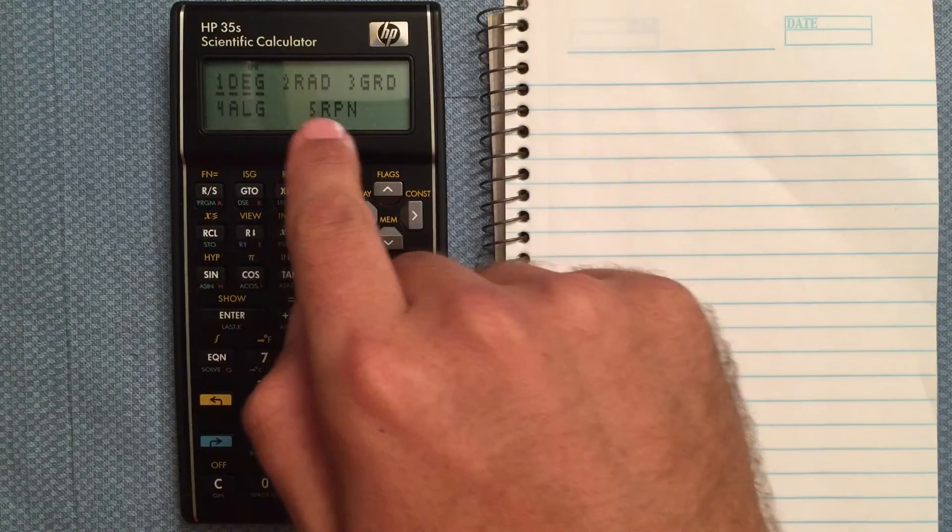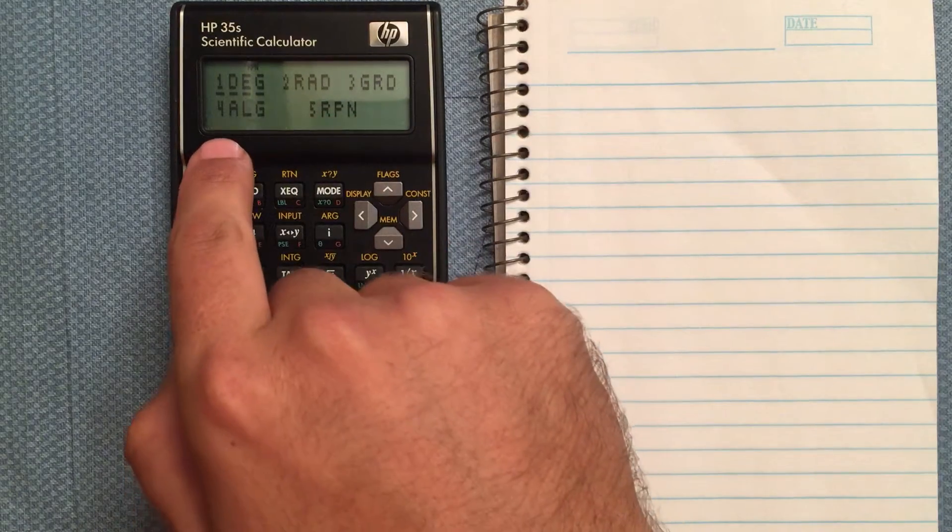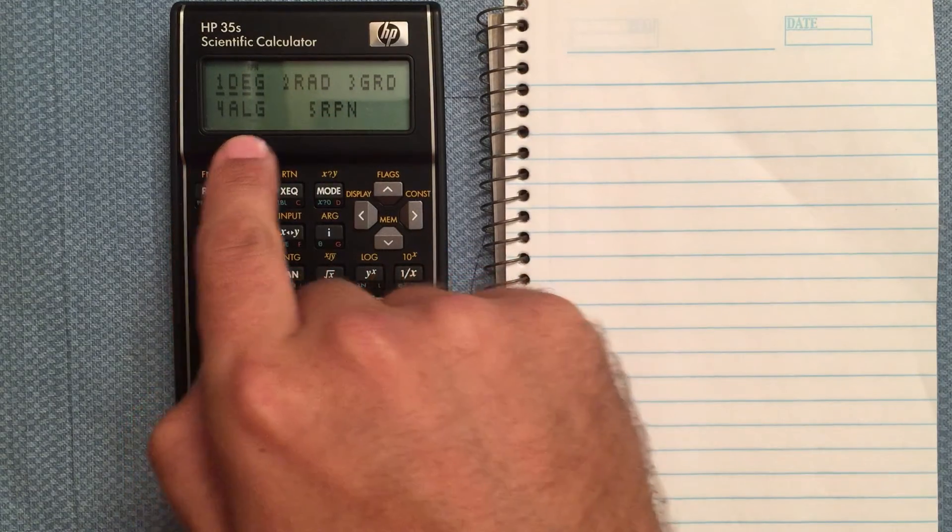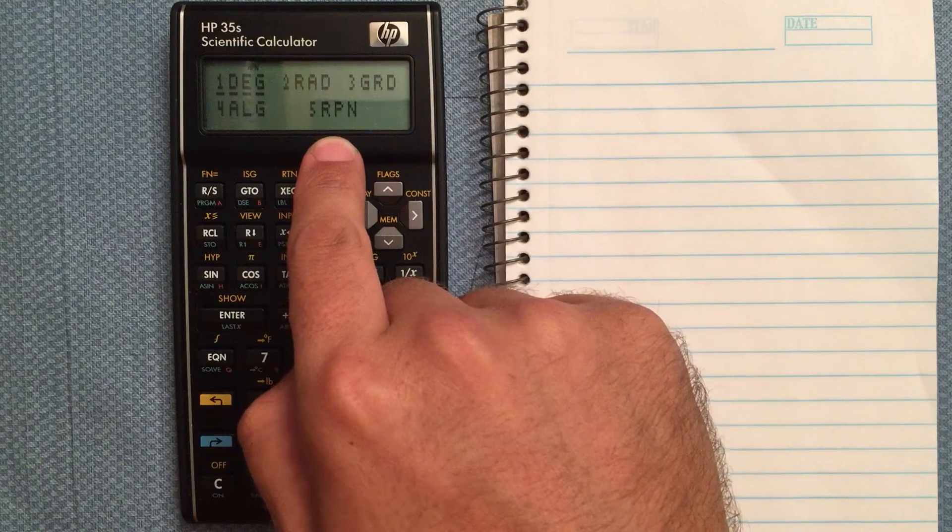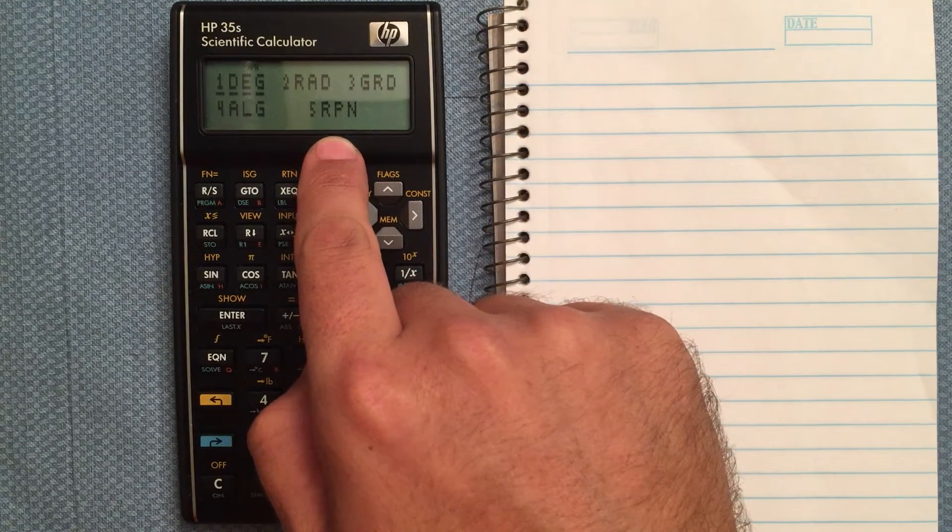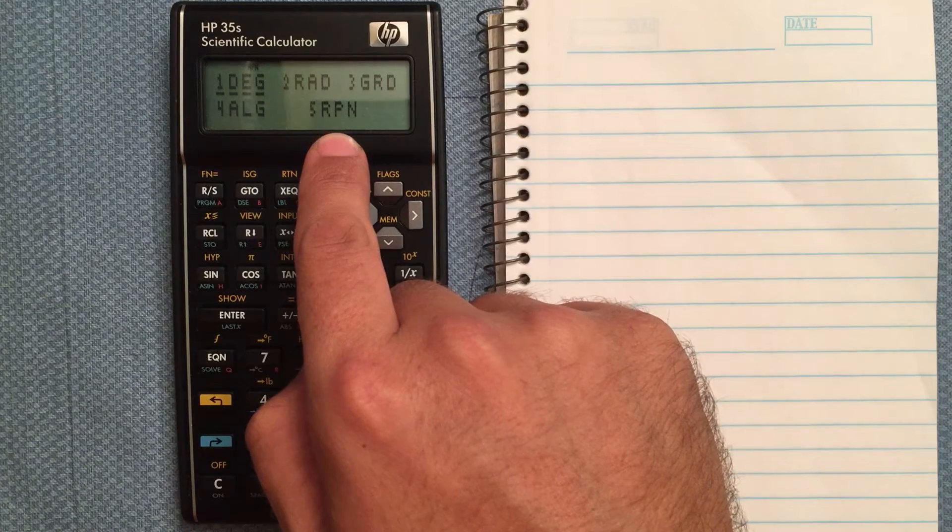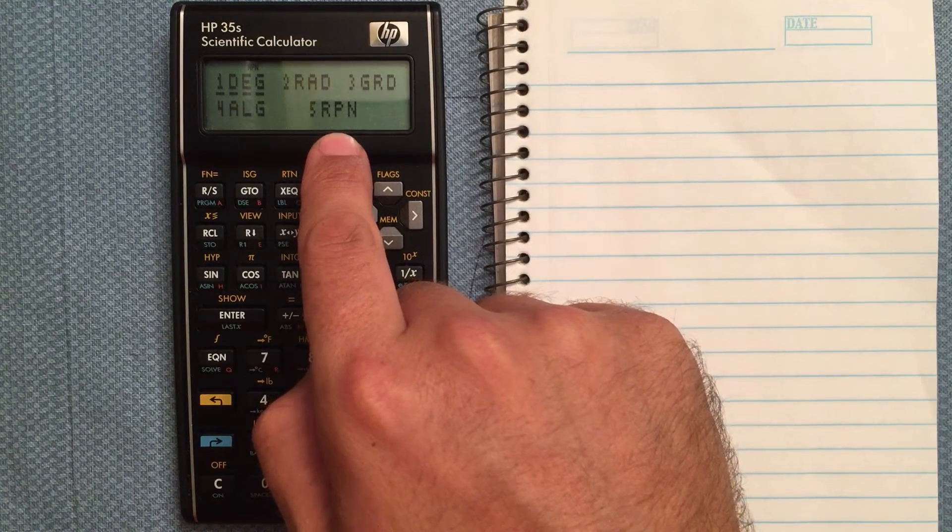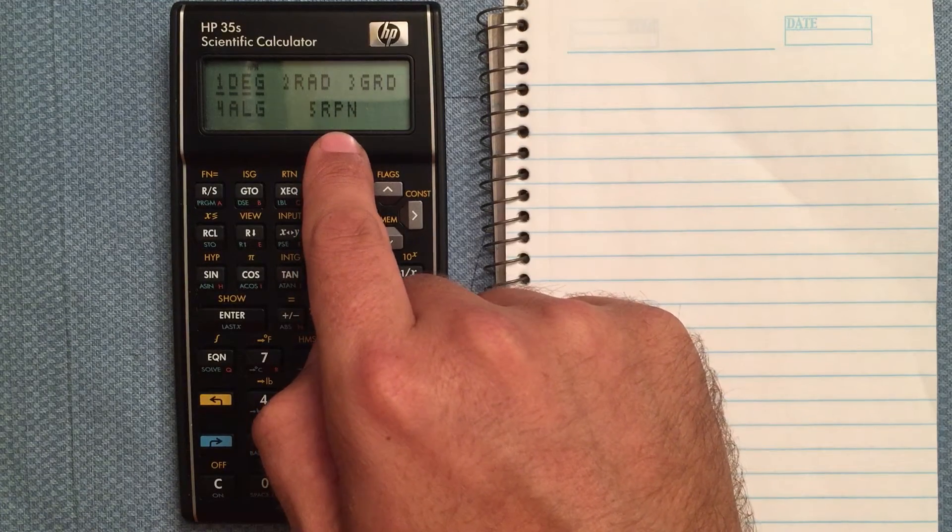You have degrees, radians, gradians, and then you have algebraic mode and RPN. Now if you bought this calculator, you're probably familiar with RPN, but I'm going to go ahead and do a video on that just to explain what it is.